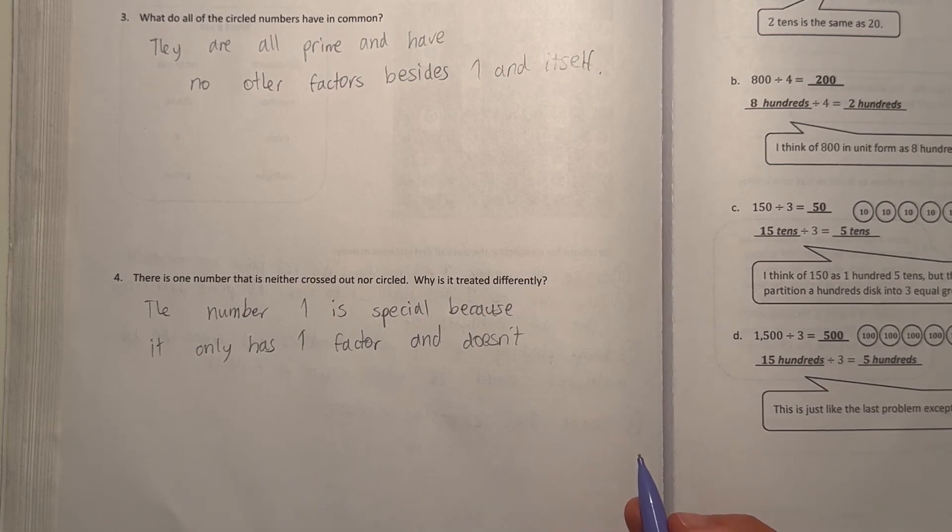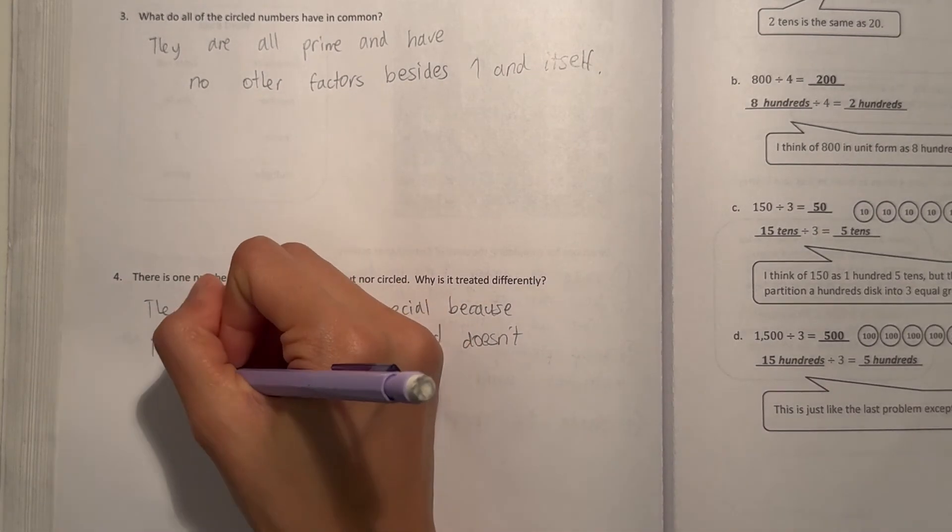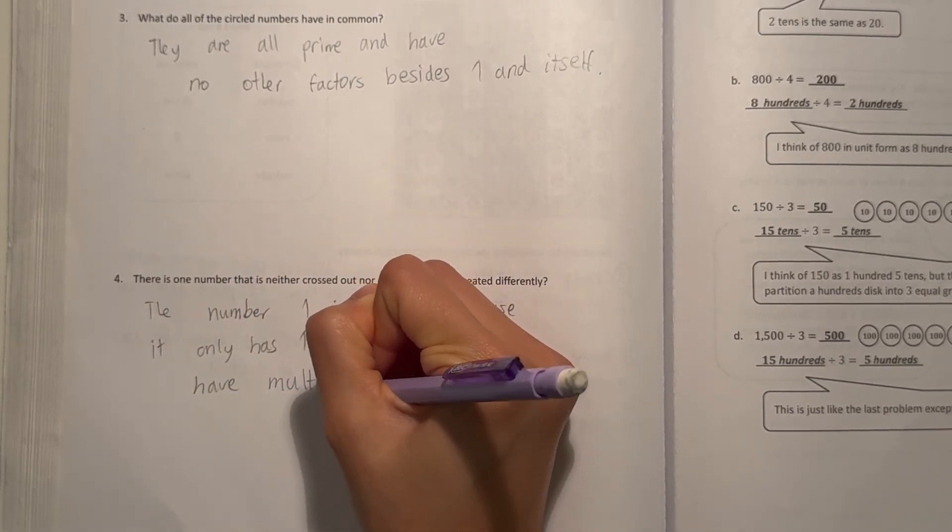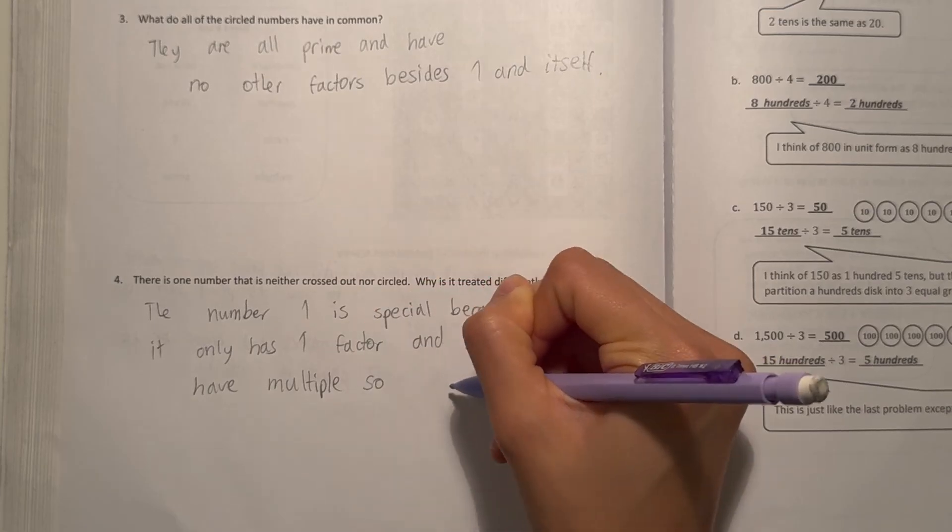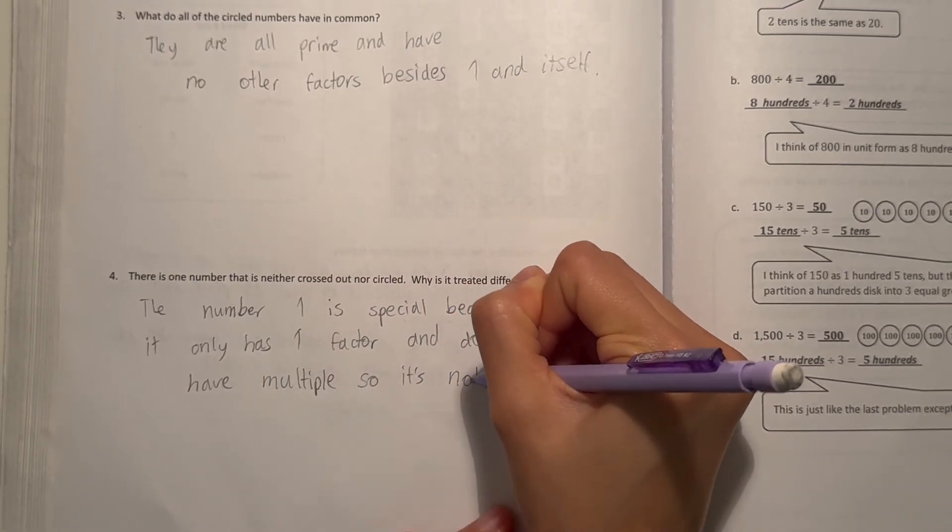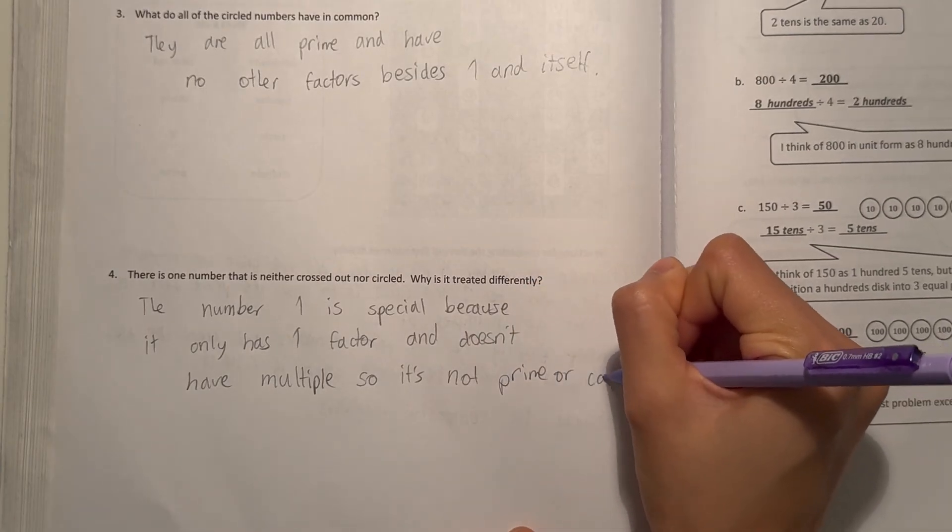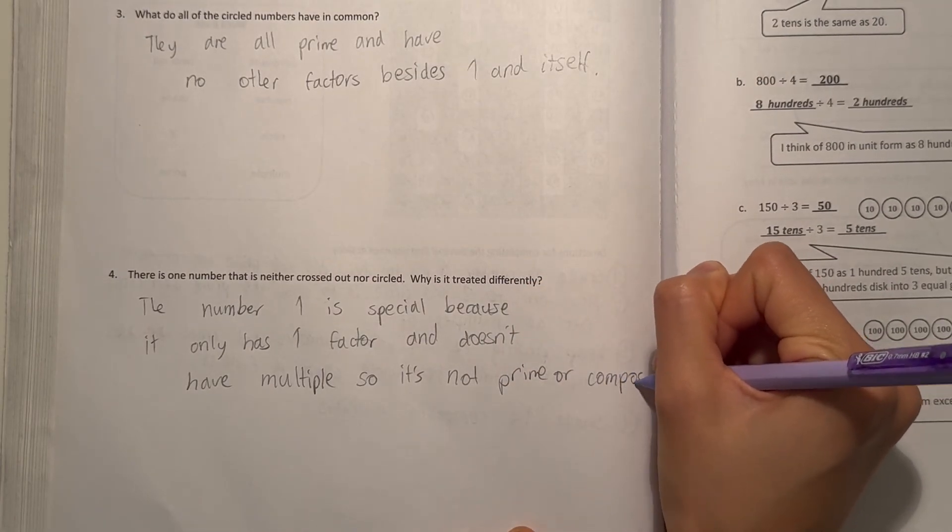So, number one is special because it only has one factor and doesn't have multiple. So, it's not prime or a composite.